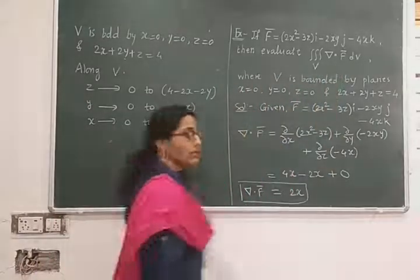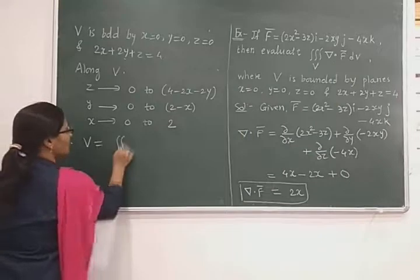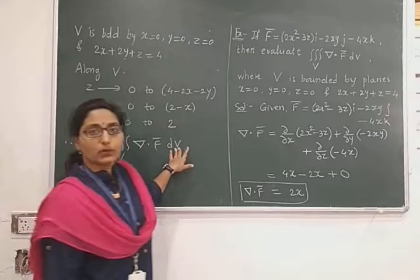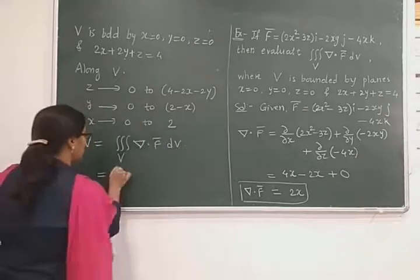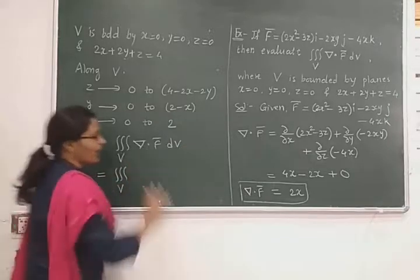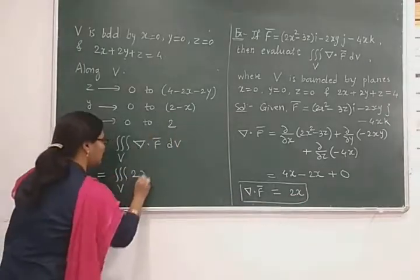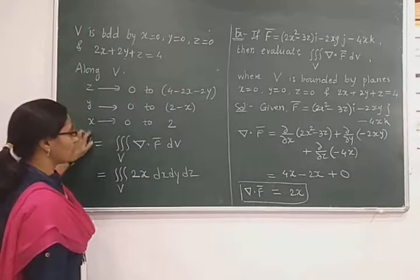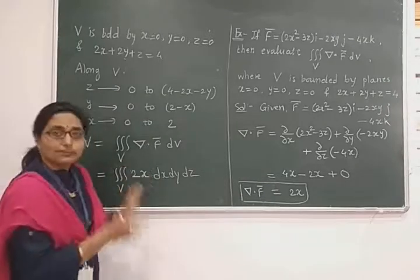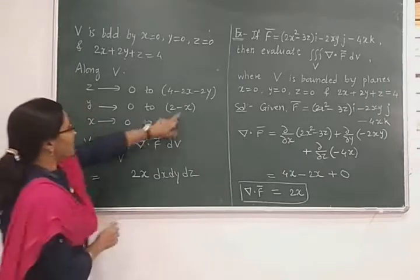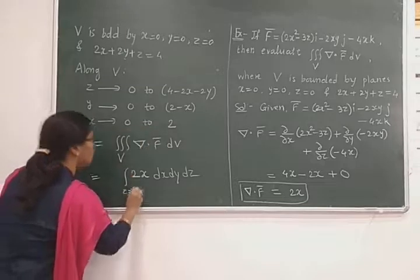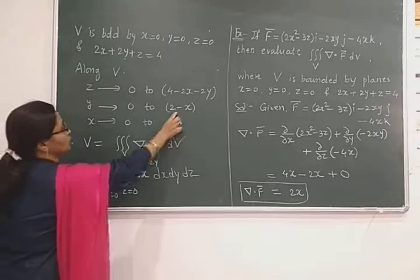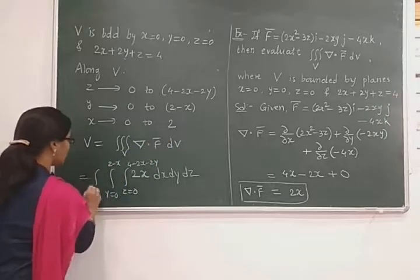Now we consider the required volume integral: V equals triple integration over V of del dot F bar dV, which equals triple integration of 2x dx dy dz. Substituting the limits: z varies from 0 to 4 - 2x - 2y, y varies from 0 to 2 - x, and x varies from 0 to 2.